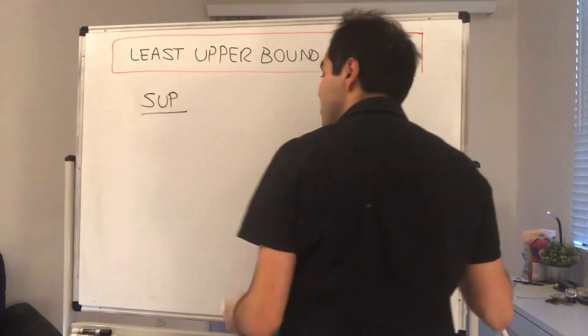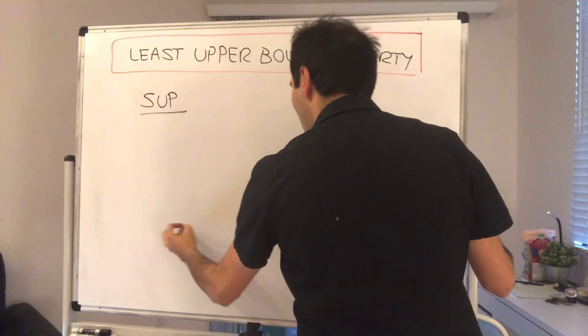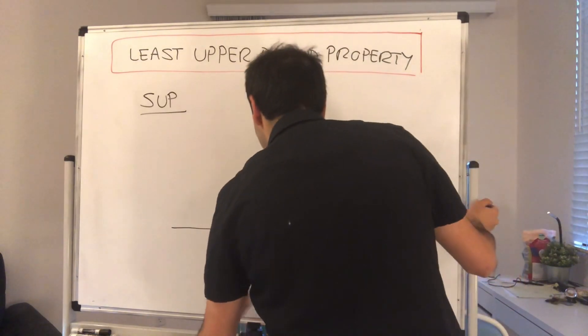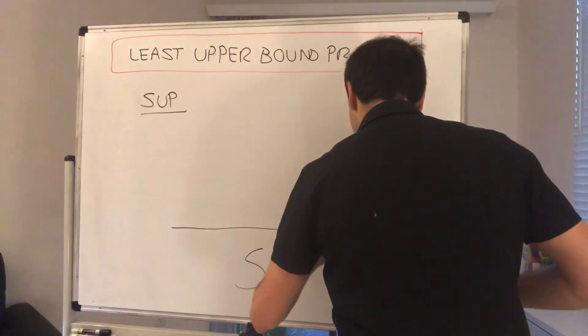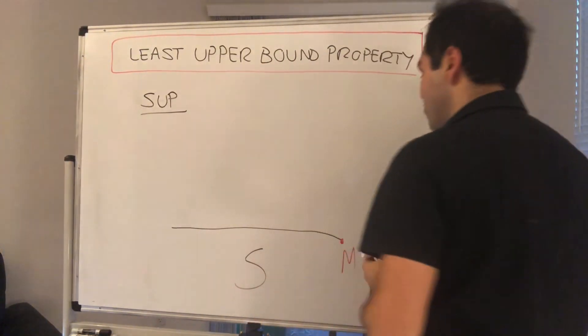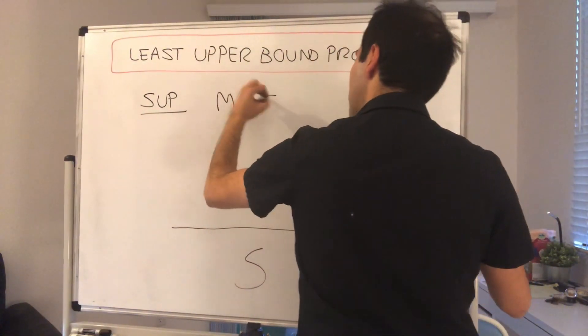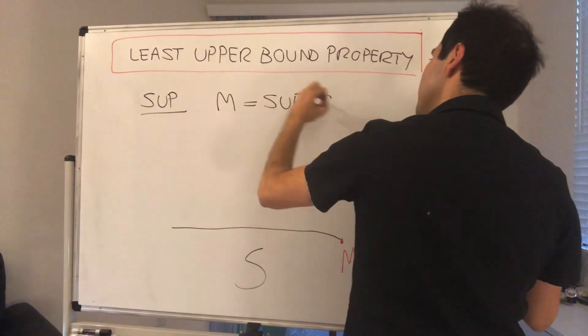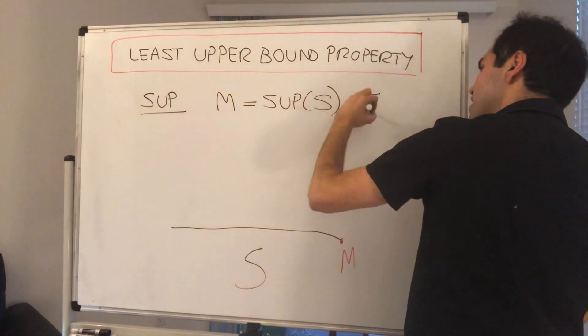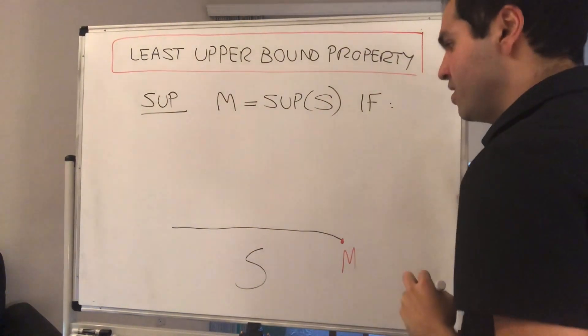So again, let S be a non-empty subset of R that is bounded above by M. Then we say that M is the least upper bound of S, or M is the supremum of S, if and only if the following condition holds.